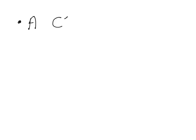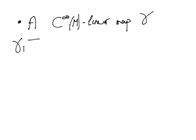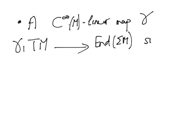The second ingredient: I need also to have a C^∞-linear map gamma from the tangent bundle TM into the endomorphism of σ(M), such that it satisfies the following three properties.